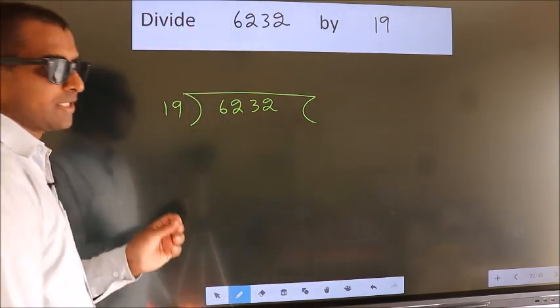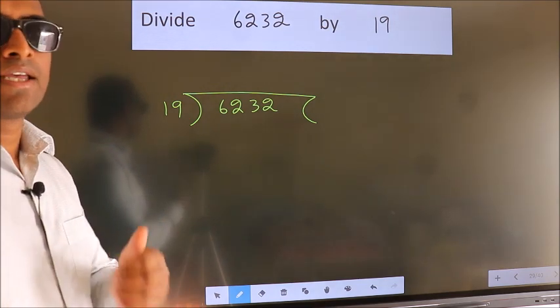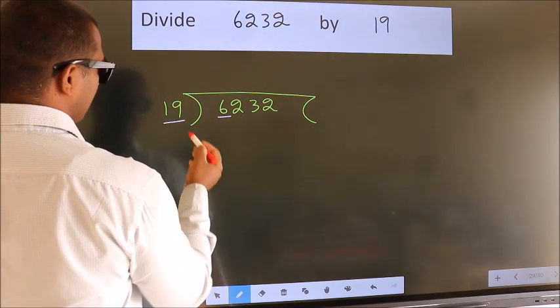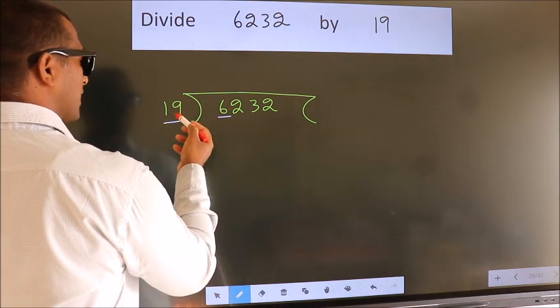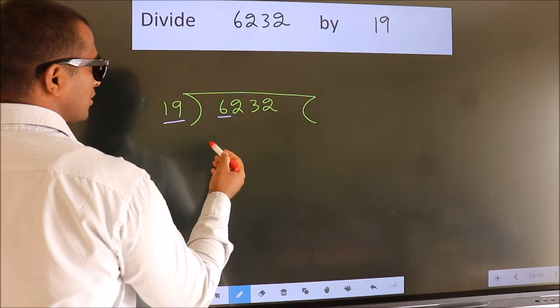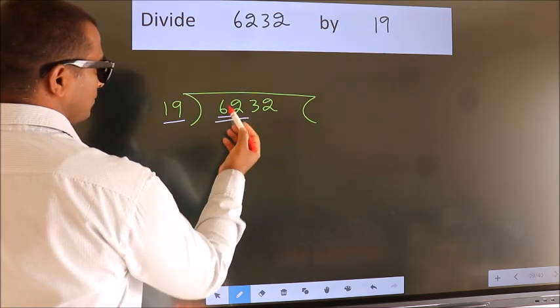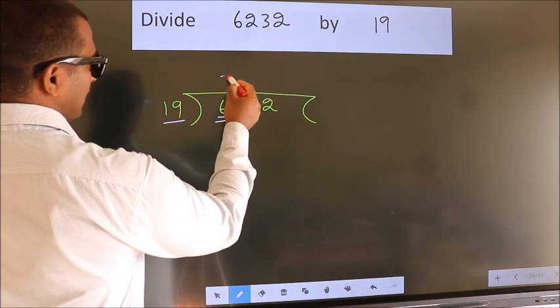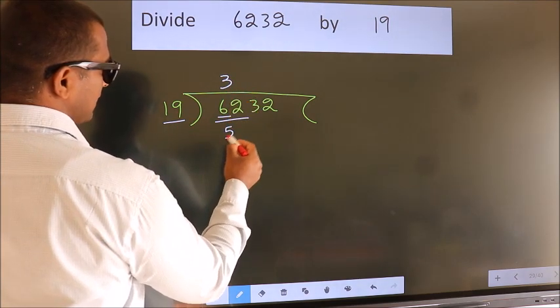This is step 1. Next, here we have 6. Here 19. 6 is smaller than 19. So, we should take two numbers, 62. A number close to 62 in the 19 table is 19 times 3, 57.